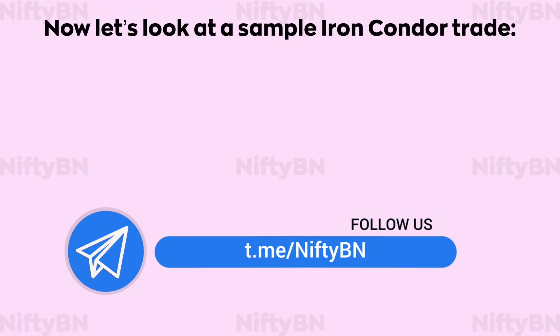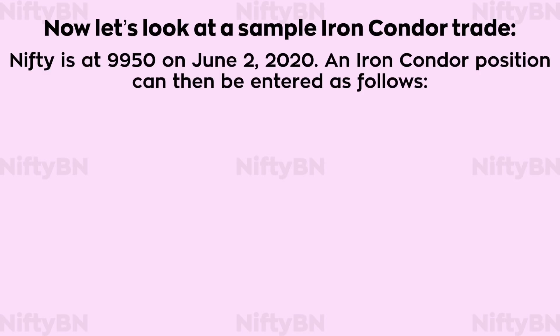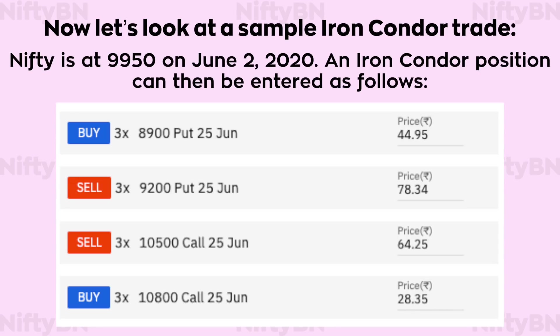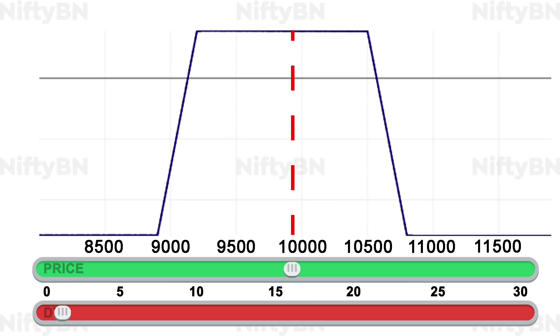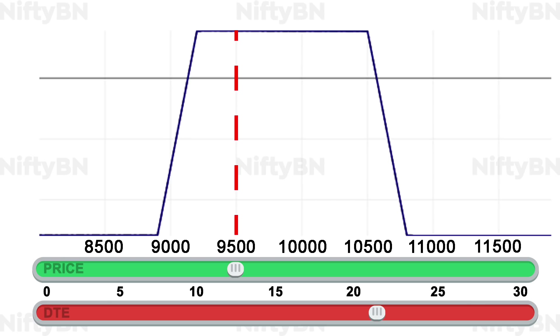Let's look at a sample iron condor trade. Nifty is at 9950 on June 2nd, 2020. The iron condor position is entered as follows: Buy 3 25th June 8900 strike puts at 44.95; Sell 3 25th June 9200 strike puts at 78.34; Sell 3 25th June 10,500 strike calls at 64.25; Buy 3 25th June 10,800 strike calls at 28.35. Say 3 weeks into the trade, Nifty moved down to 9500, which is about 3% above the strike price of the sold put of the iron condor. This should be our first trigger.